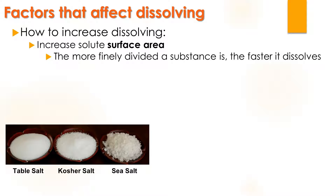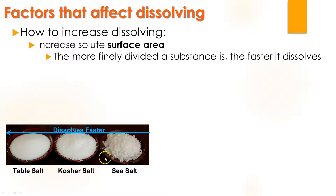Here I have an example of three types of sodium chloride: table salt, kosher salt, and sea salt. As you can see, sea salt has the largest crystals and table salt is the most finely divided. From right to left, sea salt will dissolve slowest compared to kosher salt, which will dissolve slower compared to table salt.